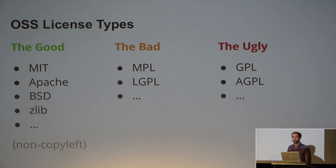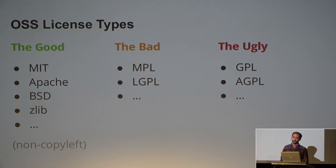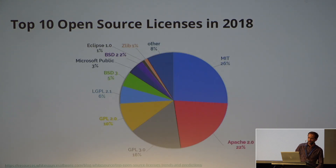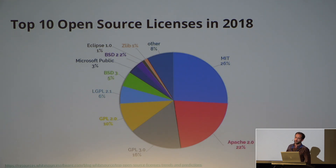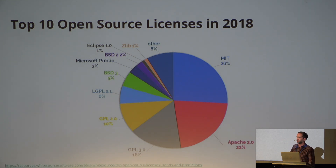Then there are the bad: the Mozilla license, LGPL, and the not-so-permissive licenses like the General Public License and its derivatives. When we look at usage from last year, it's pretty much dominated by the very permissive licenses — a lot of MIT and Apache — which I think is a good thing, so the developer community has a lot of options for how to use frameworks and libraries.